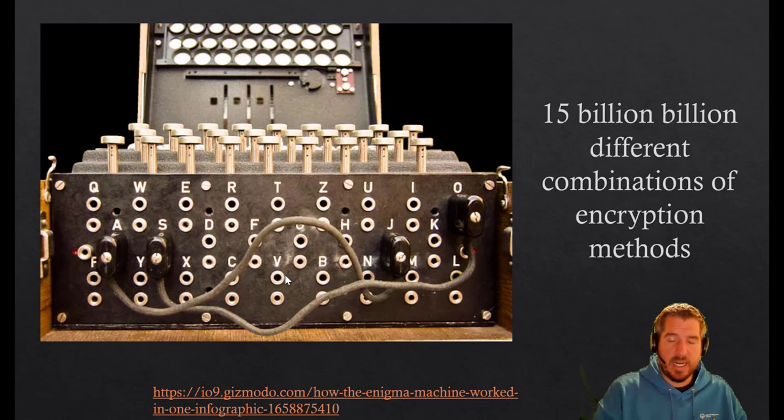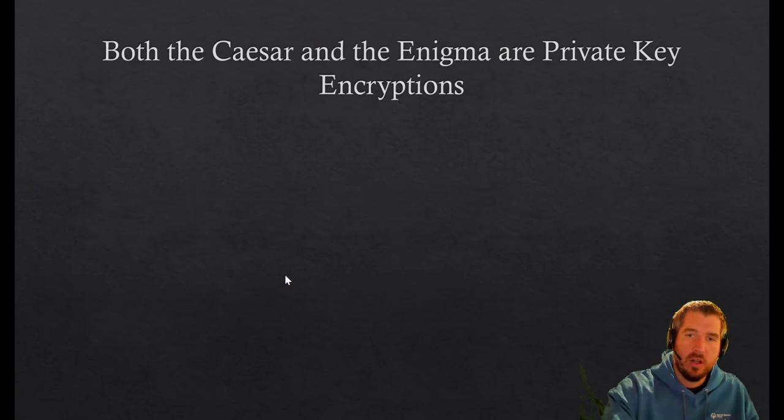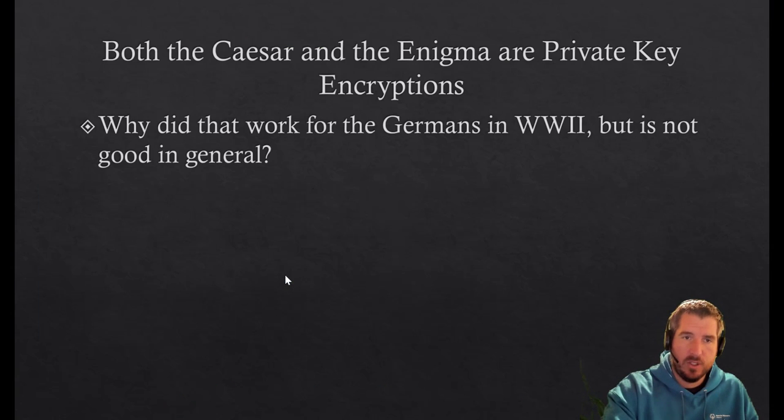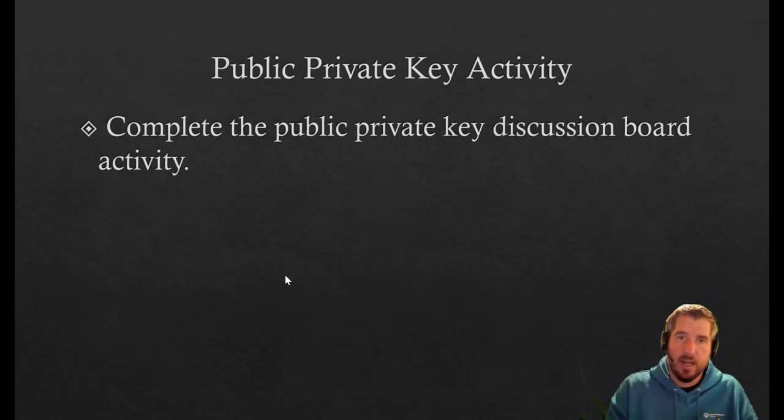Basically, there's no way for me to give a code book to everyone I want to talk to on the internet, just like the Germans did in World War II and the Romans did. So you're going to look at another way to do this, which is actually what's used for the internet: generating public and private key encryption. You're going to complete the public-private key discussion board activity that you'll see on Canvas.